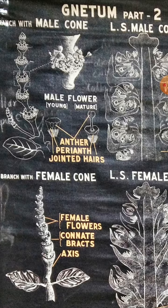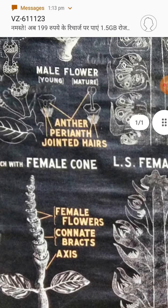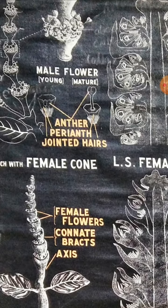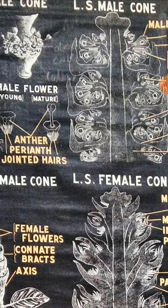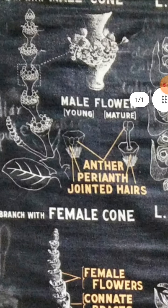When young, the male flower is enclosed within perianth; at maturity it protrudes out through the perianth. Anthers dehisce by longitudinal slit to release pollen grains or microspores. The microspore is spherical and uninucleate with thick and spiny exine and thin and smooth intine. So this is the structure of male cone.